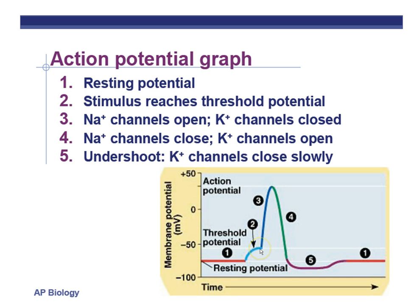Once we reach the threshold potential, the next step is the action potential that's triggered. The action potential is synonymous with the nerve impulse. Sodium channels open up, so we have sodium entering the axon as well as the dendrites and the cell body. As the inside becomes more positive, we have a depolarization of that neuron, and eventually it becomes slightly positive. Then, after the sodium enters, transmitting the impulse down the line like a wave and opening up new sodium channels, the sodium channels will close and the potassium channels open up. Potassium will leave the axon, and as the positively charged potassium leaves, the charges inside become less and less positive until they become negative again.